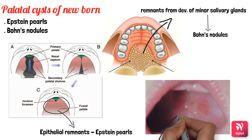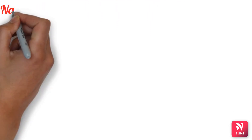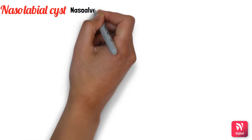Epstein pearls are present along the mid-palatine raphe, whereas Bohn's nodules are present as soft papules at multiple areas of the palate. Both appear as yellow or white mucosal papules — keratin-filled cysts — differing only in location.